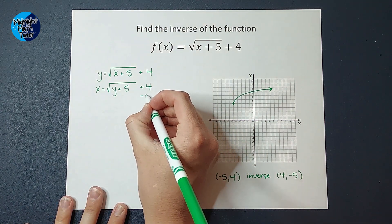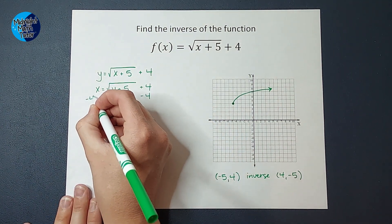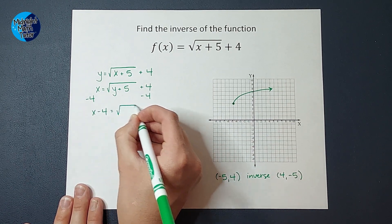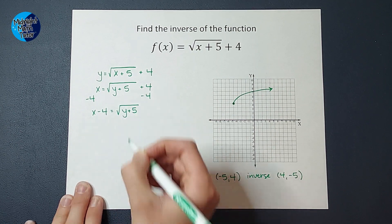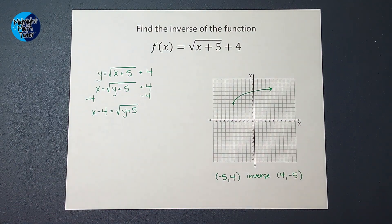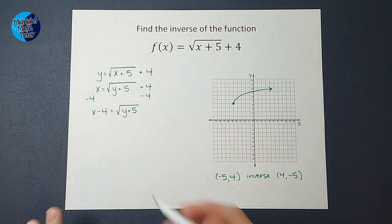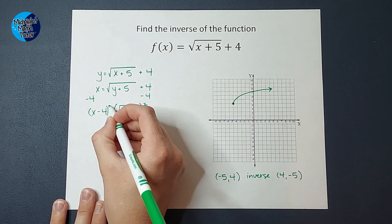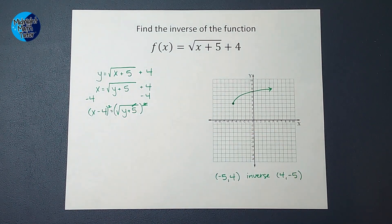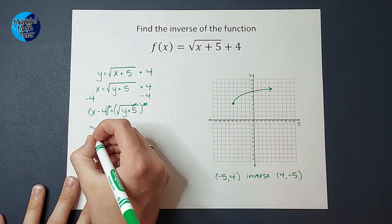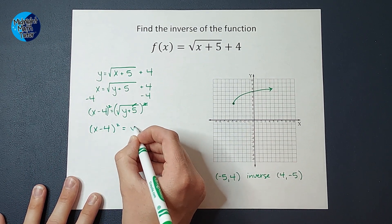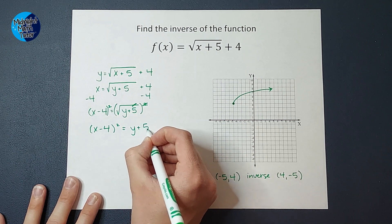So to get y alone, I'm going to subtract 4 from both sides. So I end up with x minus 4 equals the square root of y plus 5. Now you might be thinking, oh, subtract the 5, but I got to get rid of the square root first. So the opposite of the square root is to square, right? So I'm going to square both sides. The squared and the square root cancel out.